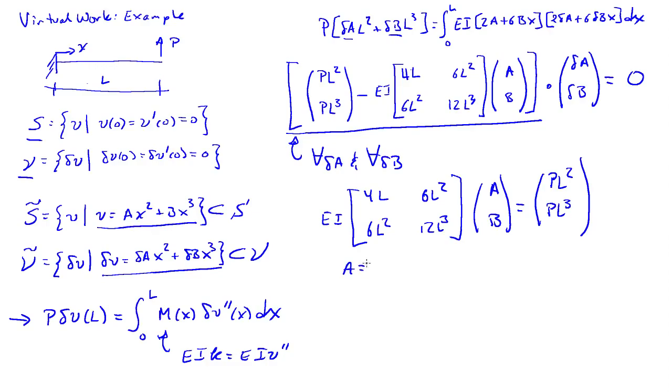So A, my solve will be PL over 2 EI and B will be equal to minus P over 6 EI.